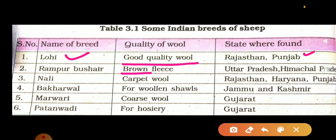The third one is Nali. The wool of Nali is used for carpet making. It is found in Rajasthan, Haryana and Punjab.